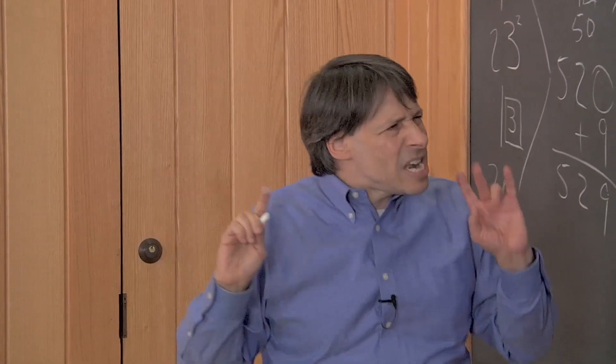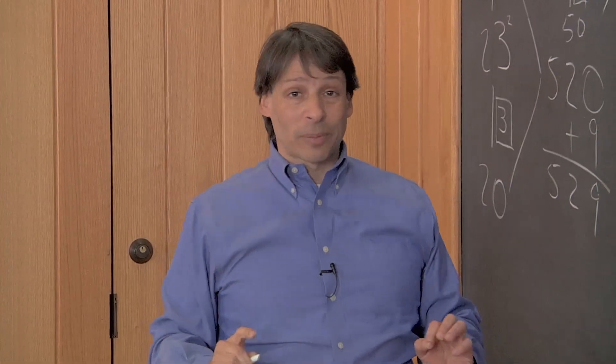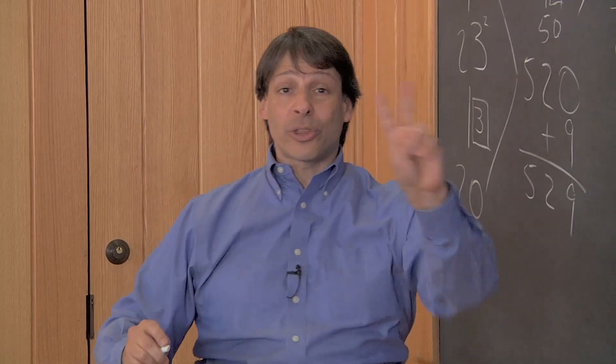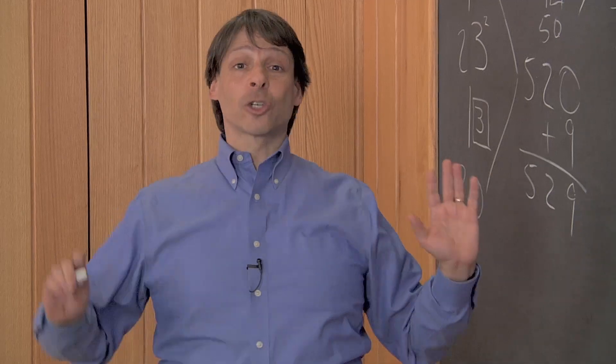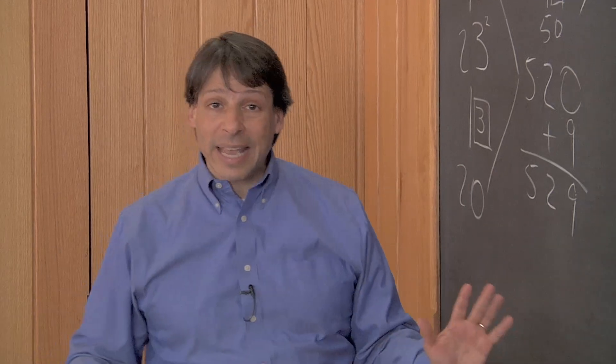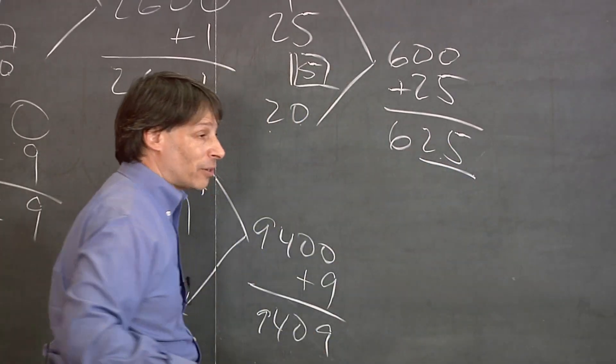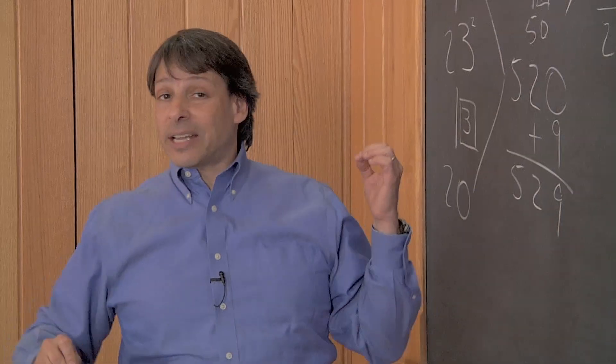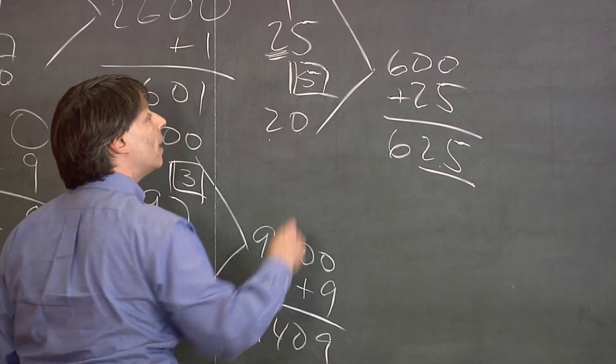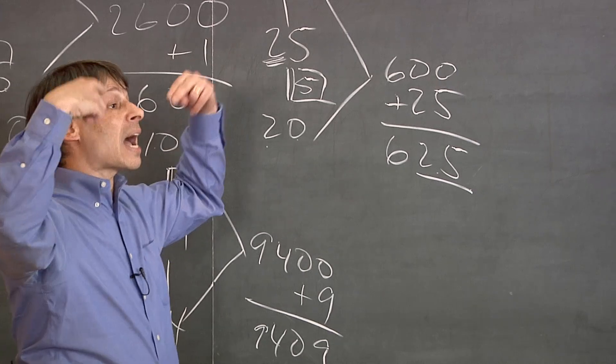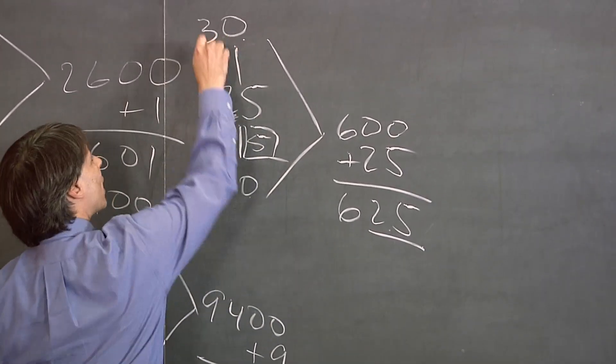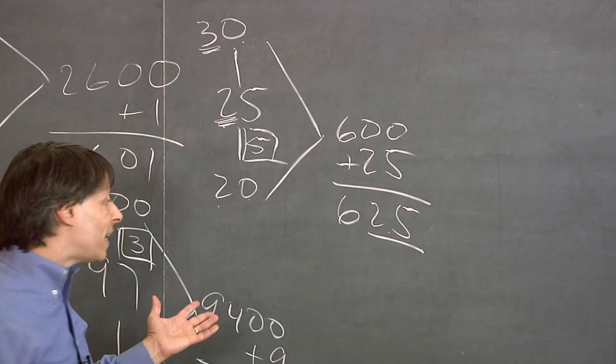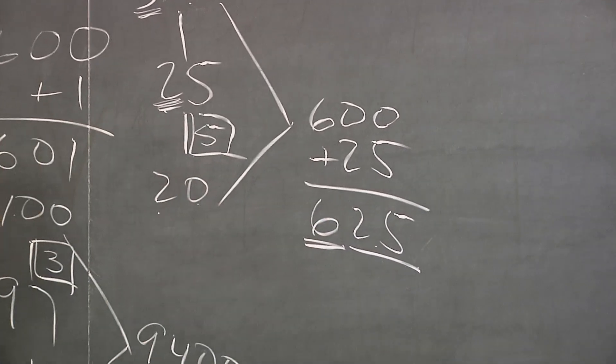By the way, there's another way of doing these problems that end in 5 that you might find even easier still. If you square a number that ends in 5, there's only two things you need to know. First of all, the answer will always, always end in 25. Also, how does the answer begin? It begins by taking the first digit, which is 2, multiplying that by the next higher digit, which is 3. 2 times 3 is 6. And that's your answer. 625.